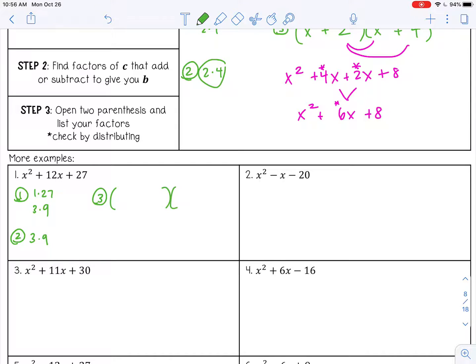And then lastly, we're going to open up our parentheses. So it's going to be x times x, because that's going to give us this x squared. And then positive 3, positive 9. Or you could have listed 9 and then 3.